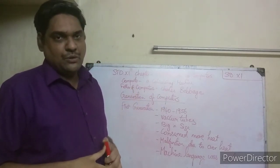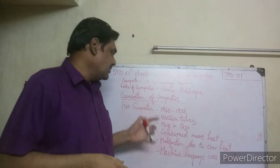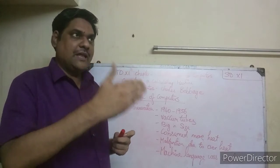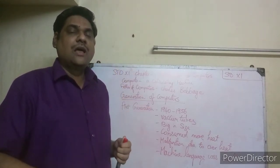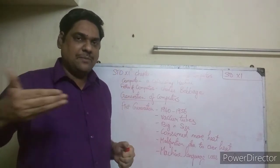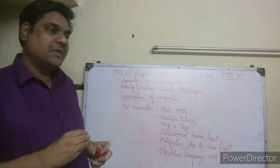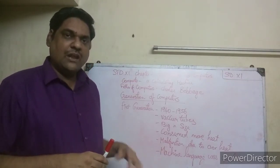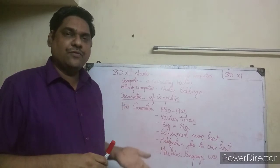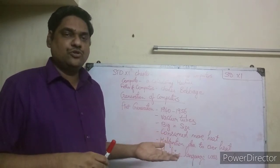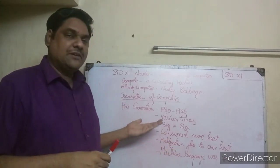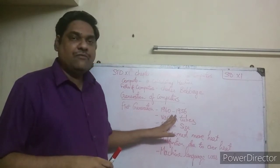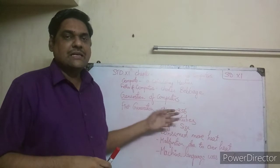Now let us see the generations of computers. There are six generations of computers - the fifth generation is current and the sixth is future. The first generation computers were from 1940 to 1956. Let us look at each generation in detail.